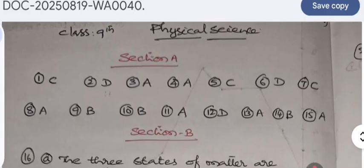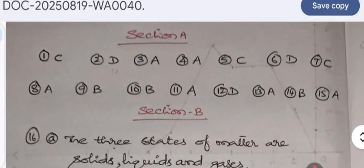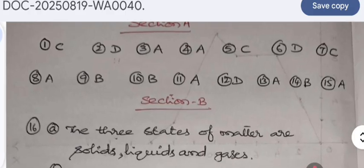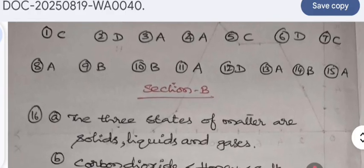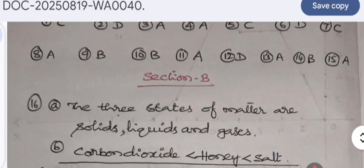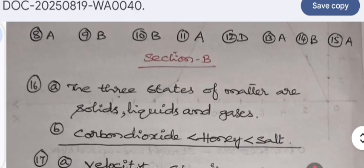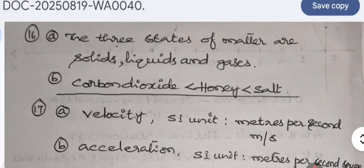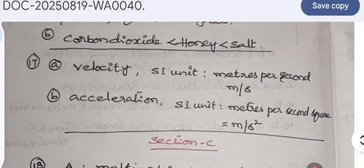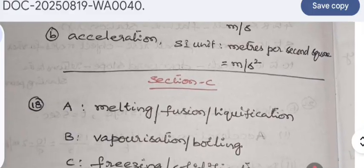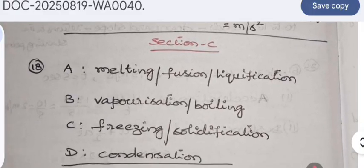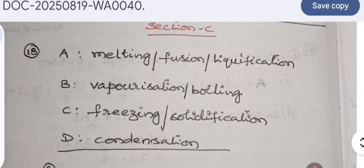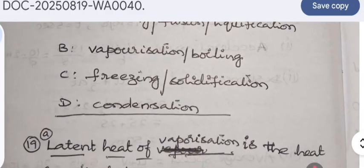Here are the answers. Question 1 is C, 2 is D, 3 is A, 4 is A, 5 is C, 6 is D, 7 is C, 8 is A, 9 is B, 10 is B, 11 is A, 12 is B, 13 is D, 14 is B, and 15 is D. Section B, as I have already said...